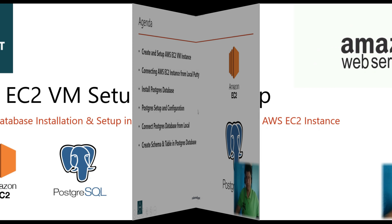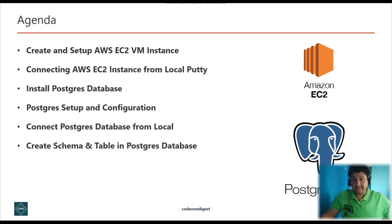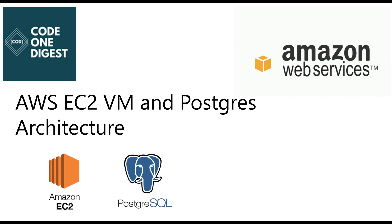Here is the agenda for today. We will create and set up an AWS EC2 instance, then connect to that EC2 instance from our local using PuTTY. We will install the Postgres database into that instance, configure it, then connect from our local database tool — DBeaver or pgAdmin. Finally, we will create a schema and table in the Postgres database from our local while the database runs on the EC2 instance.